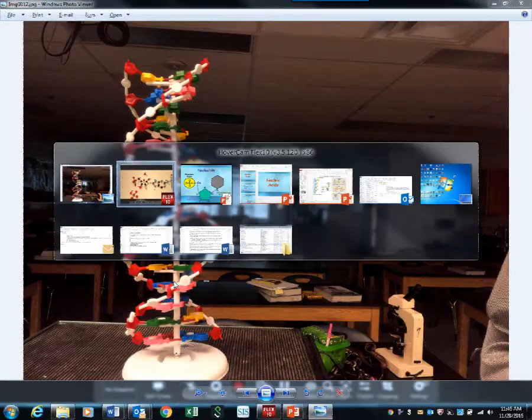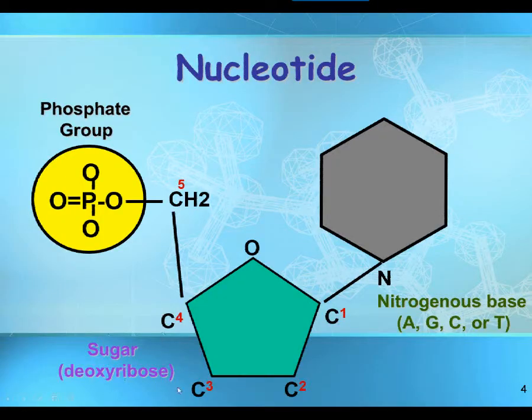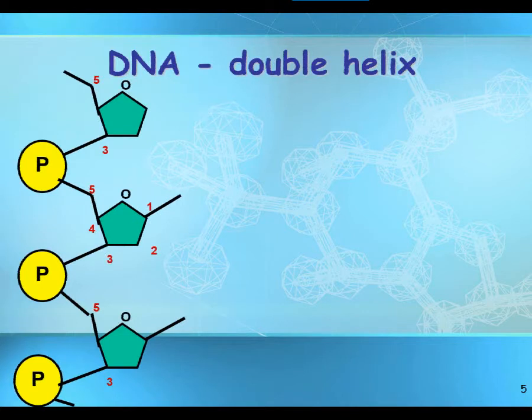And then I should probably point out something: one, two, three, four, five. Okay, let's go back to the picture. Notice I've labeled carbons one, two, three, four, five. Five and three are where the phosphates attach. Now let's assume that this is your first nitrogen base - it's gonna have a phosphate attached.